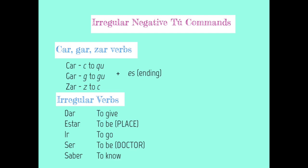For example, if I want to say don't look for a pencil right now — maybe I'm talking and I don't want someone to not be paying attention — I'd say no busques. Don't look for it. The QU spelling and then the ES on the end. Don't arrive late: no llegues tarde. The GU and then the ES ending — llegues.